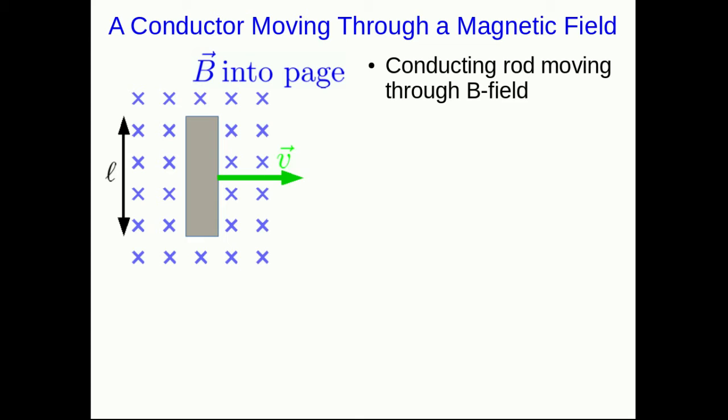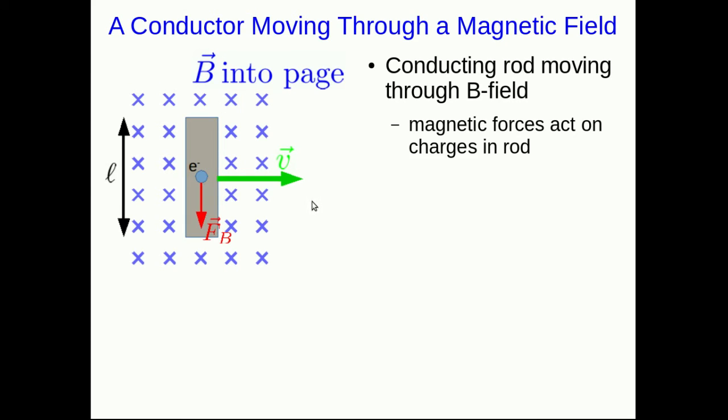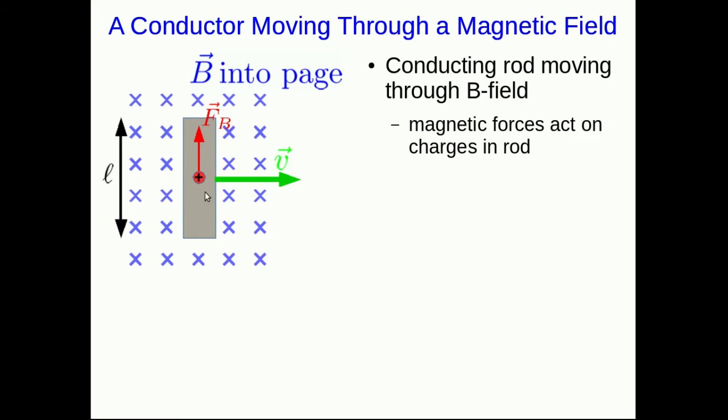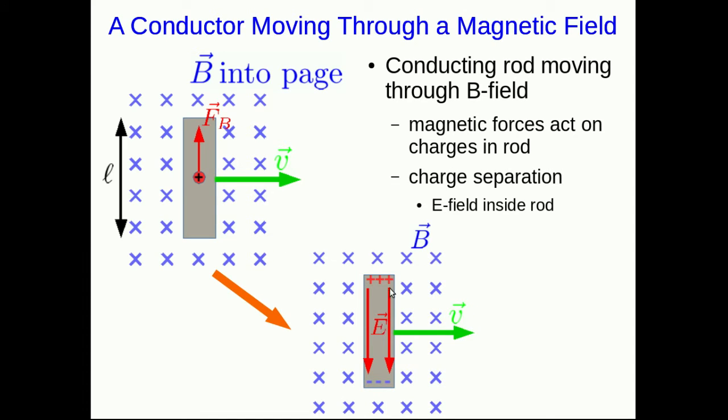We're going to start with a simpler case of a conducting rod moving through a magnetic field. So here's some conducting rod of length L moving with some velocity through a B field and I've put the B field into the page. If you think about what's going to happen, this conducting rod is full of charges and the electrons in it are free to move. Well if you work through the right-hand rule, this V with this B on a negative charge, you get a magnetic force down. We're going to pretend that what's inside the conductor is actually positive charges and so they have a magnetic force upwards on them. That's going to cause positive charge to collect at one end of the rod and leaving the other end of the rod negative.